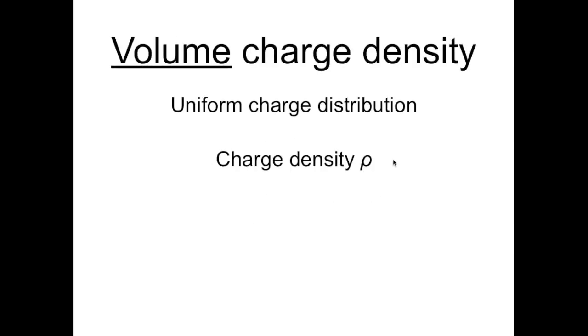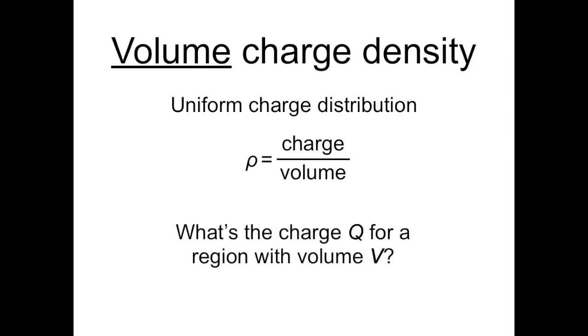Finally, in three-dimensions, rho is the Greek letter of choice for charge density. We can write rho as the charge per unit volume, so rho has units of coulombs per meter cubed. If we ask what the charge q is for a region with volume V, and the region has a uniform volumetric charge density rho, then rho equals q over V. And this means that q equals rho times V.